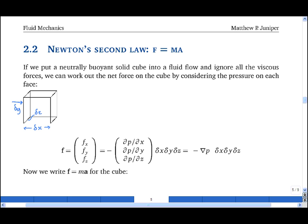If the pressure on the left hand face is p, then the pressure on the right hand face is p plus partial dp partial x times delta x. This shows that the force in the x direction, fx, is equal to p delta y delta z minus p plus partial dp dx delta x times delta y delta z. That's equal to minus partial dp by dx times delta x times delta y times delta z.